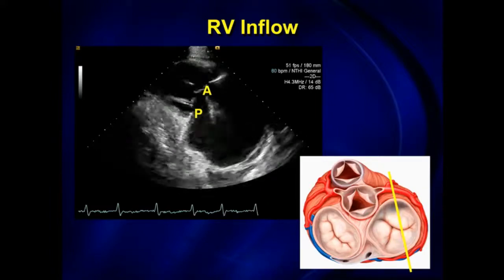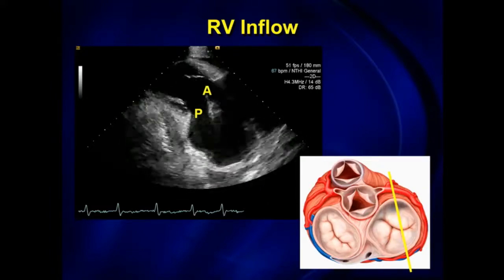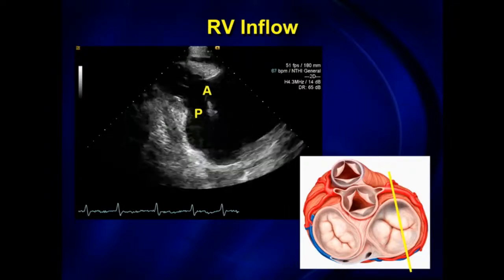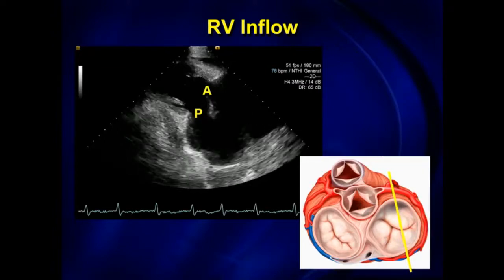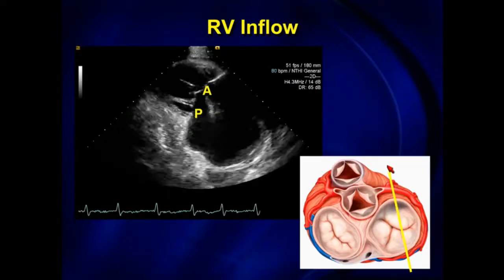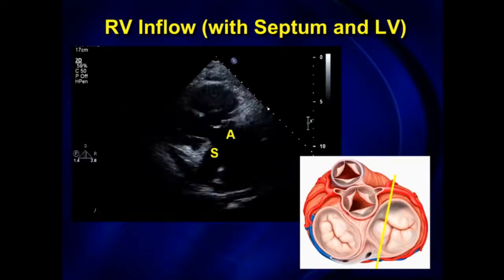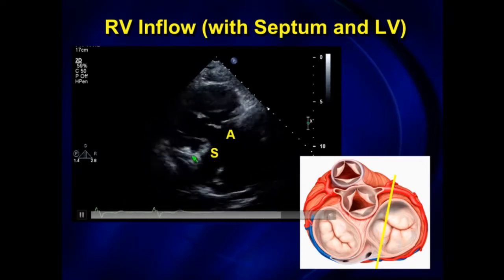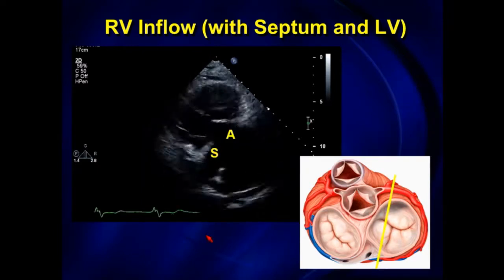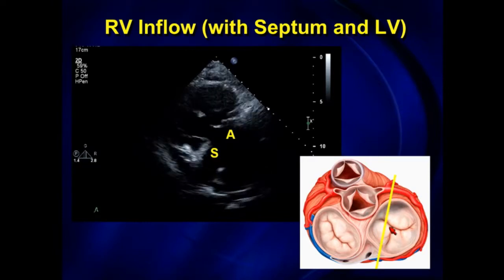The RV inflow view: if you don't see any ventricular septum or LV, this is the one view where you see the anterior and posterior leaflets, cutting the heart in this plane. If you see a little bit of ventricular septum or LV, then whenever you see ventricular septum you're dealing with a septal leaflet, and you'll have more of the anterior and septal leaflets in view.